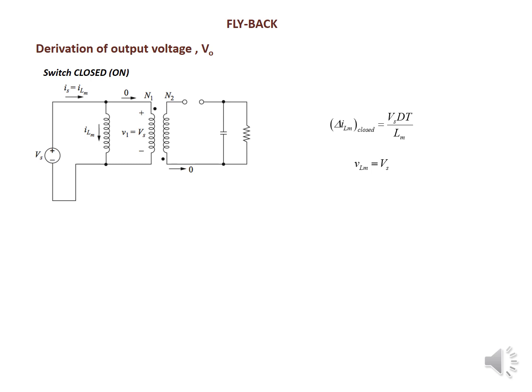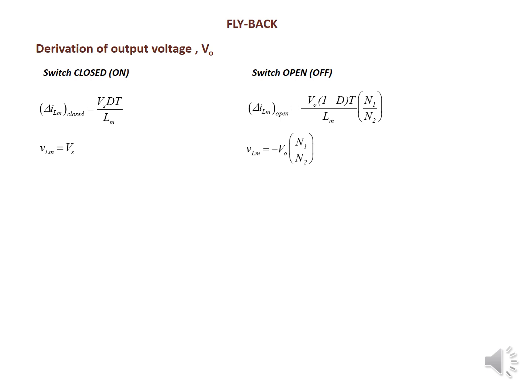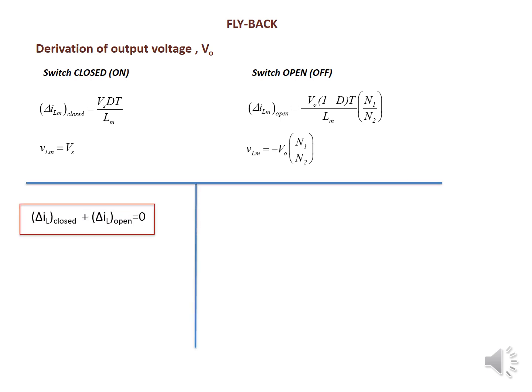When the switch is closed (on state), ΔiLm_closed equals Vs·D·T divided by Lm, so VLm equals Vs. When the switch is open (off state), ΔiLm_open equals minus V0·(1−D)·T divided by (Lm·N1/N2), so VLm equals minus V0·(N1/N2). Combining both cases using the condition ΔiL_closed plus ΔiL_open equals zero, we get: Vs·D·T/Lm minus V0·(1−D)·T/(Lm·N1/N2) equals zero.